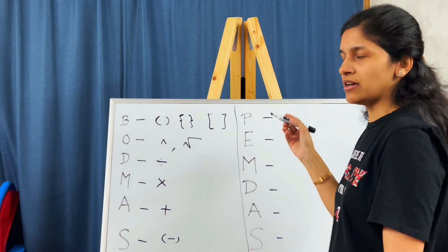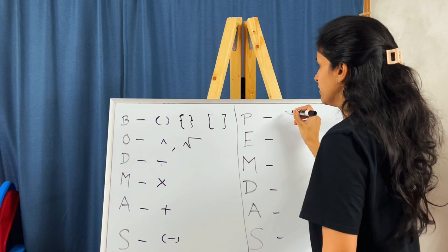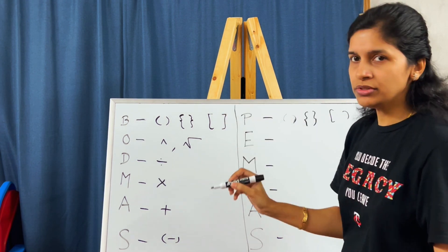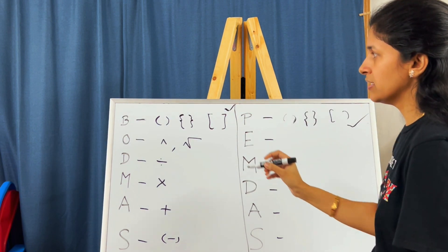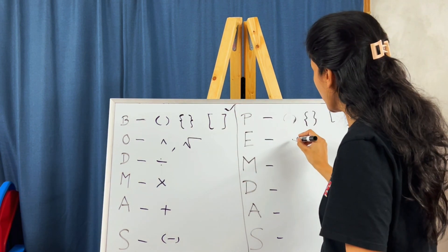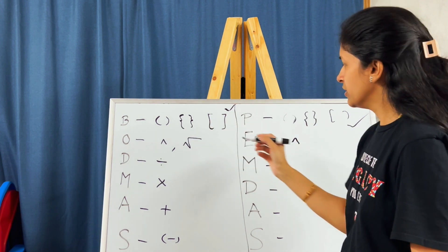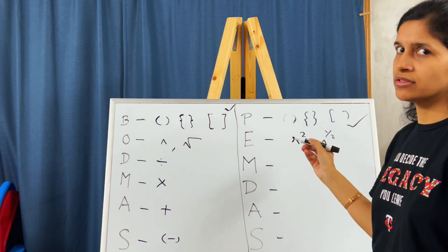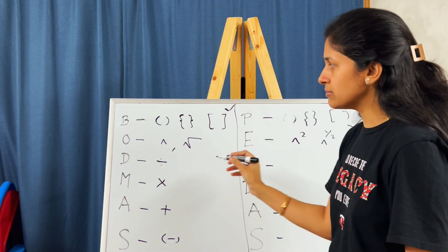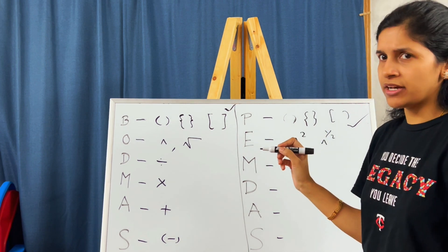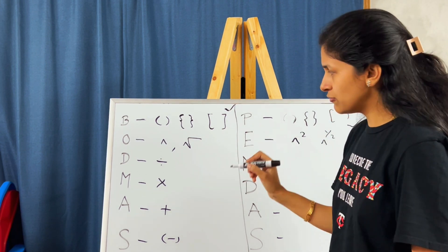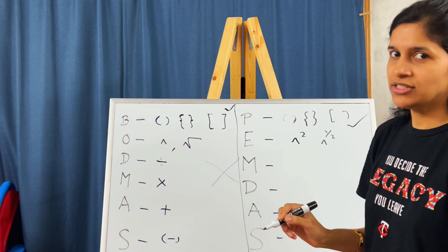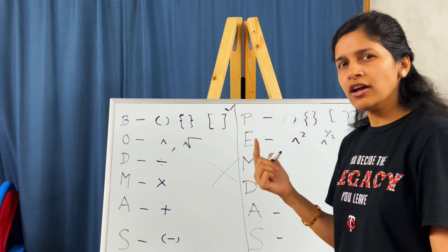Now let's check PEMDAS. P stands for Parentheses — same as BODMAS, both correct. Next, Exponents — same as BODMAS; it can be a whole exponent or a square root, so they're the same. Next comes Division in BODMAS but Multiplication in PEMDAS — so this goes in a zigzag order.